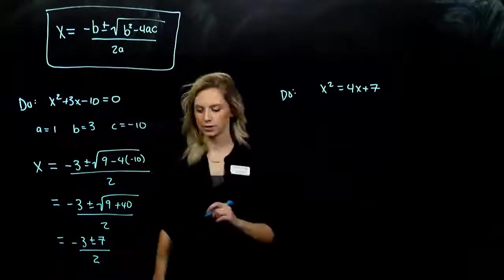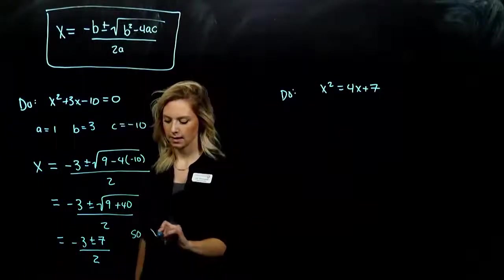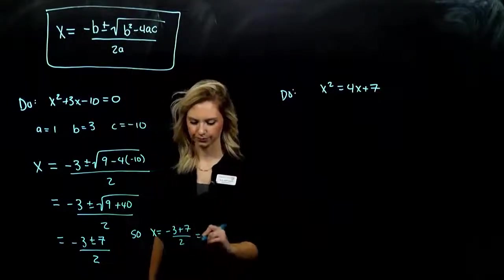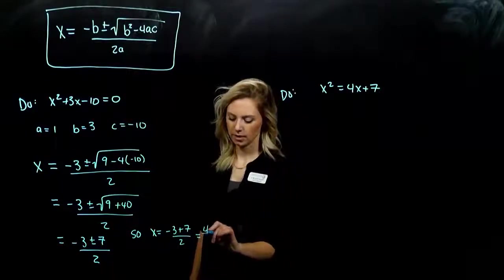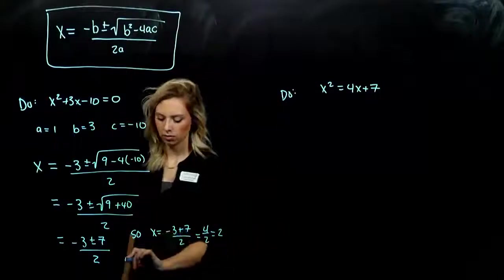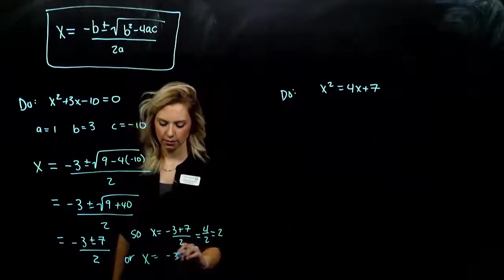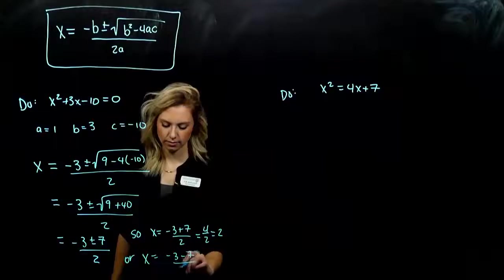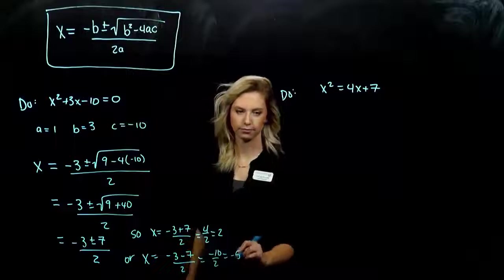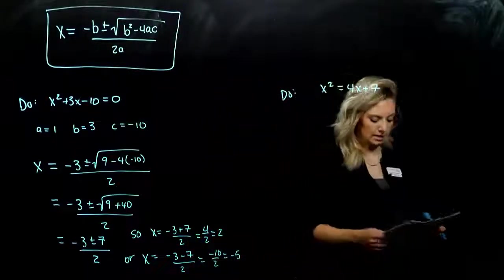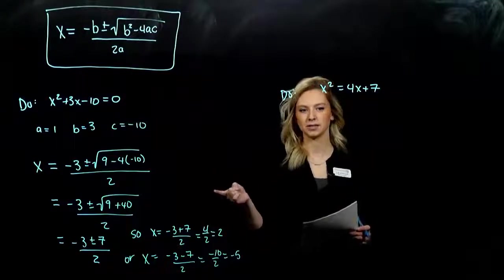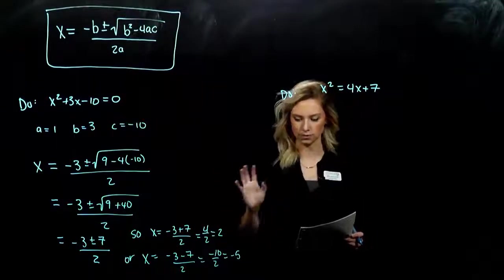So I've got negative 3 plus or minus what coming out of here? Square root of 49 is 7 all over 2. So what are my options in this case? X is equal to negative 3 plus 7 over 2, which will give me 4 divided by 2, whole number 2, easy. Or what's my other option for X? Negative 3 minus 7 divided by 2 is negative 10 divided by 2, which is negative 5.